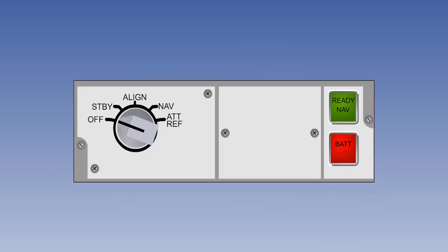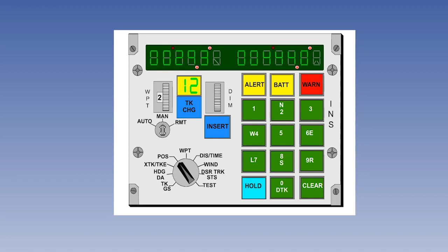The two components located on the flight deck are the mode selector unit, often abbreviated to MSU, and the control and display unit, often called the CDU.